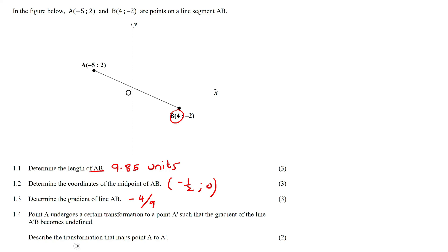What is undefined? When you have a line that is horizontal we say that the gradient is zero. But when you have a line that is completely vertical we call this undefined.